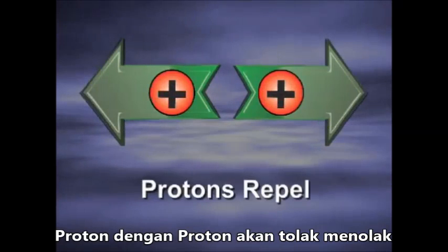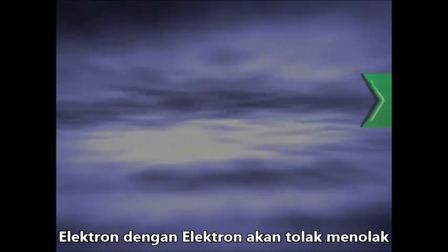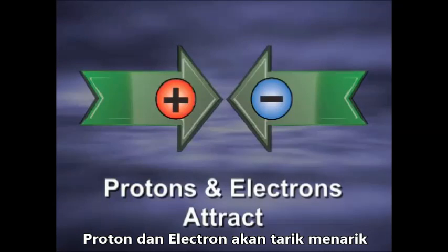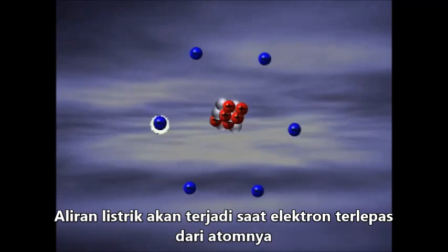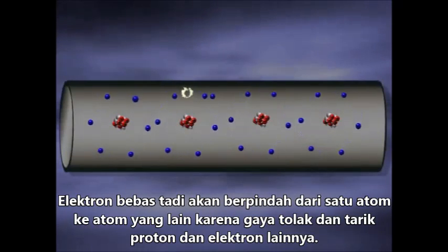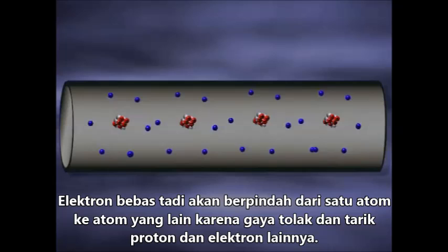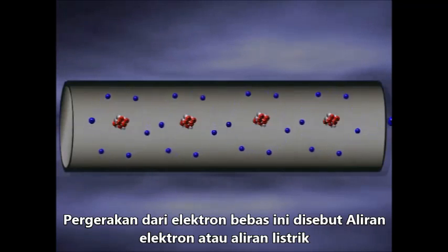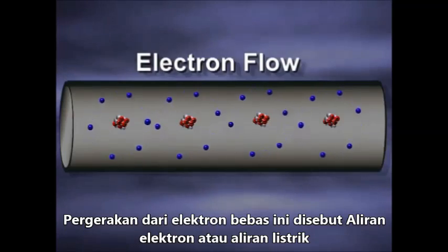Protons repel each other. Electrons repel each other. Protons and electrons attract each other. Electricity is produced when electrons are freed from their atoms, and are moved from atom to atom by the attraction and repulsion of protons and other electrons. This movement of free electrons is known as electron flow.